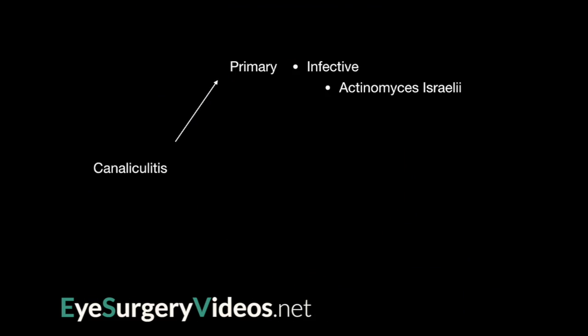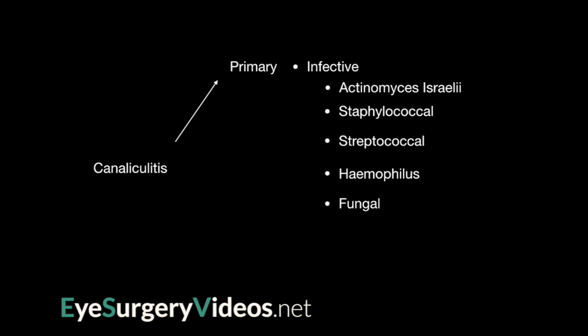Primary canaliculitis is classically secondary to Actinomyces, though other bacteria are increasingly being recognised in the pathogenesis of canaliculitis, with fungal and viral pathogens also associated with this condition. Secondary canaliculitis is usually secondary to punctal plugs. Reports of canaliculitis following traumatic syringing and probing procedures also exist.